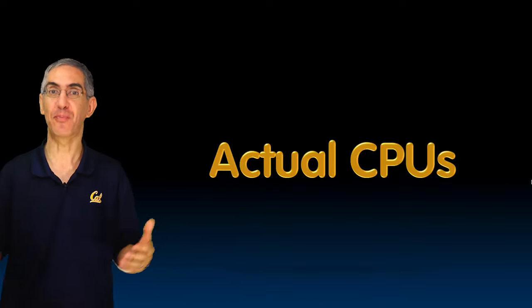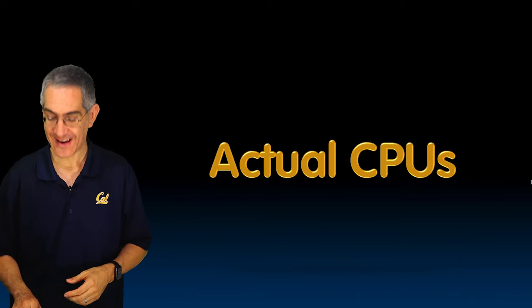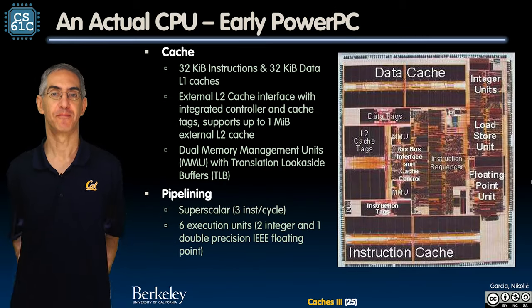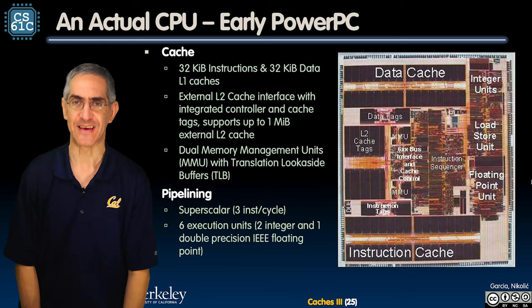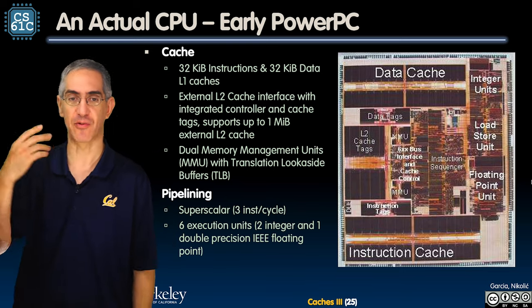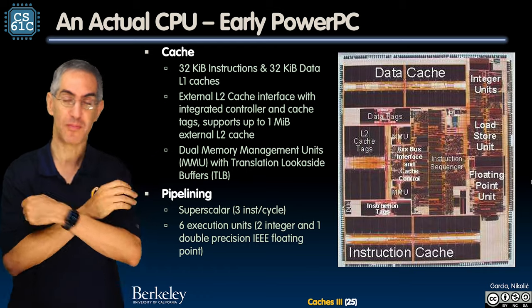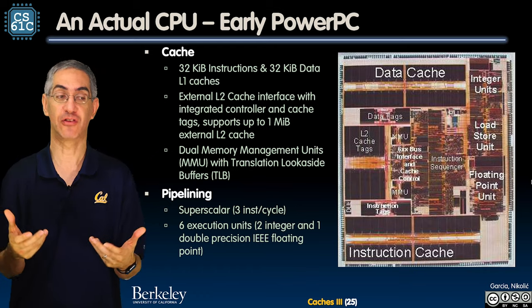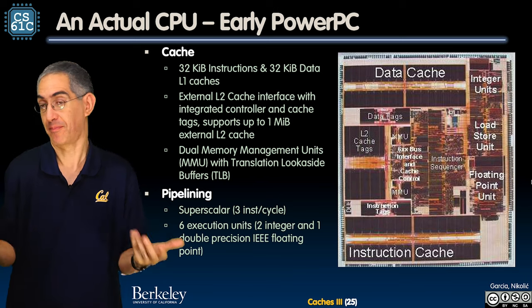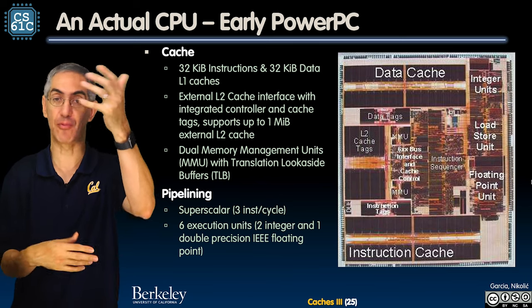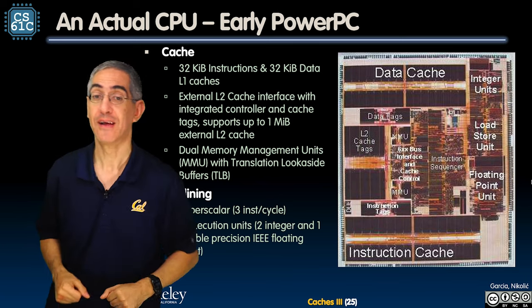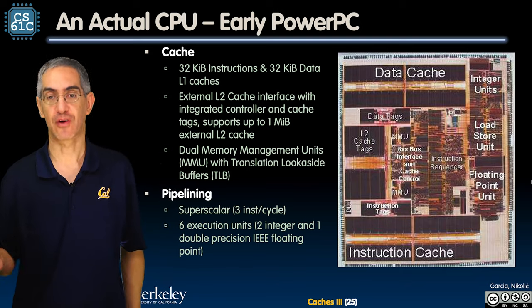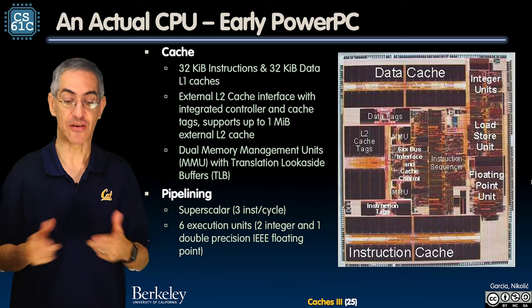Let's look at pictures of actual CPUs. Starting with the early PowerPC — this is a couple generations ago. We mentioned having separate L1 caches for instructions and data, partly because they come from different places in memory. Each is 32 kibibytes — 32 KiB for instructions and 32 KiB for data.